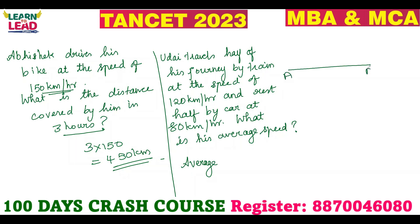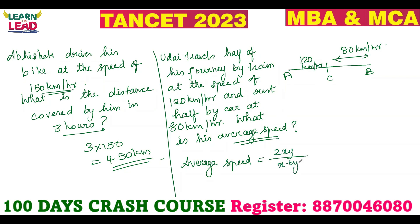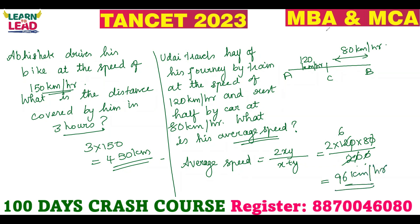Uday travels half of his journey A to C at 120 km per hour, and C to B at 80 km per hour. What is his average speed? Average speed equals 2xy divided by x plus y. So, 2 × 120 × 80 divided by 120 + 80. Cancelling zeros: 2 × 12 × 8 divided by 20 = 96 km per hour. So 96 km per hour is your answer.